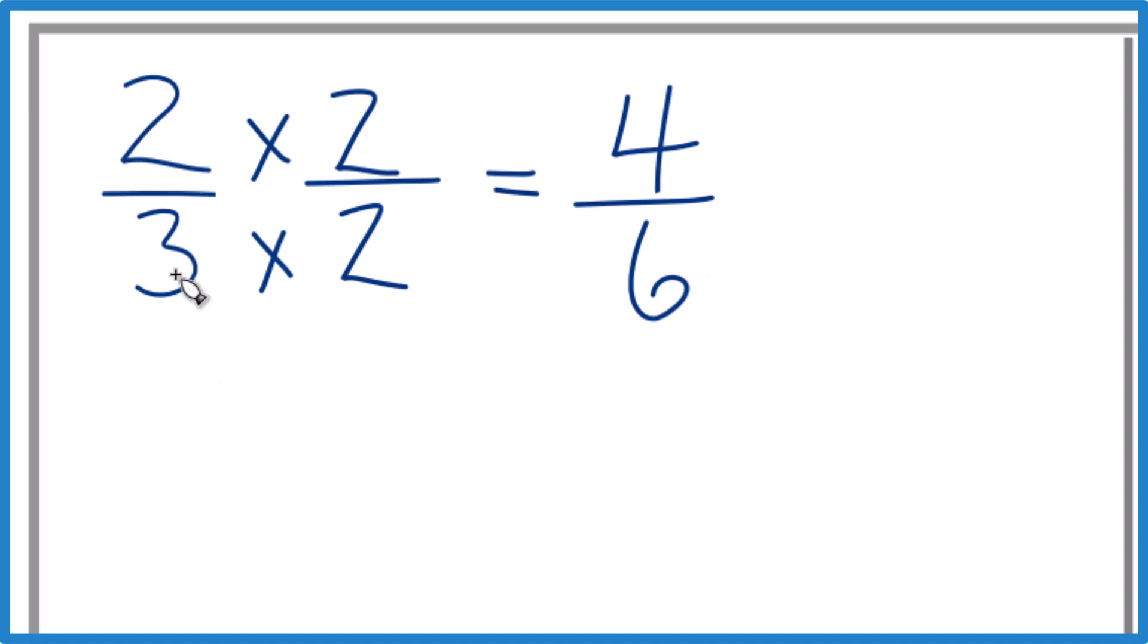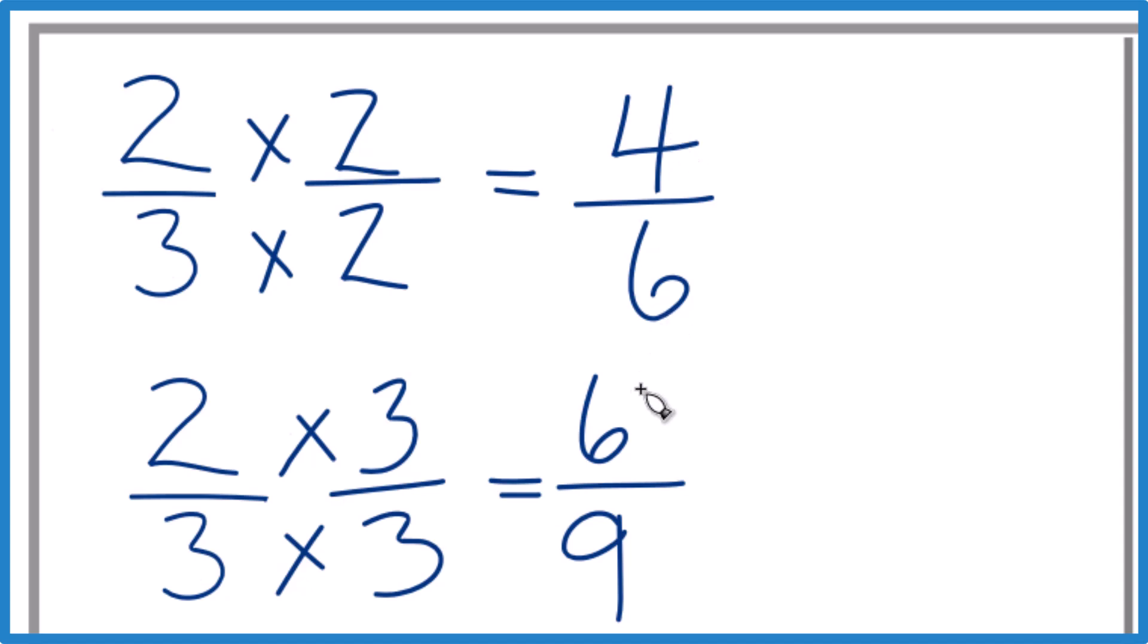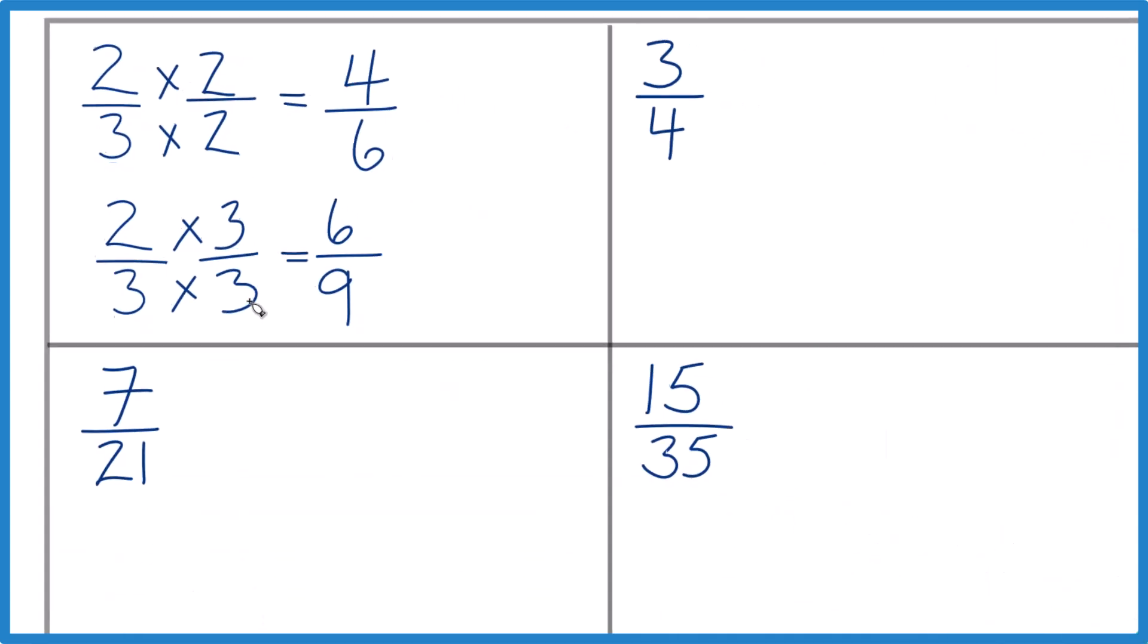How about if we take two-thirds and multiply by 3? So 2 times 3, 6. 3 times 3, 9. And 6 ninths, that's an equivalent fraction to two-thirds and to four-sixths. And as long as the numerator and the denominator are the same, you can use any numbers.